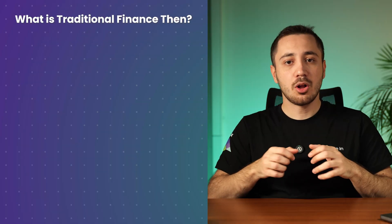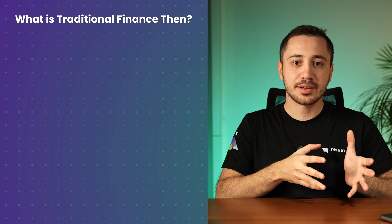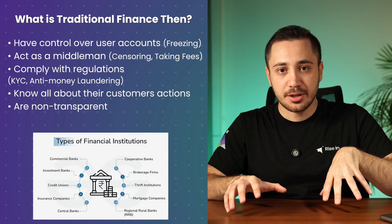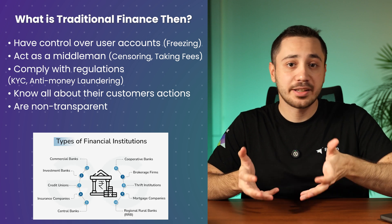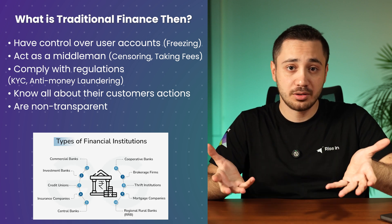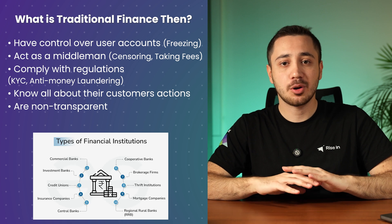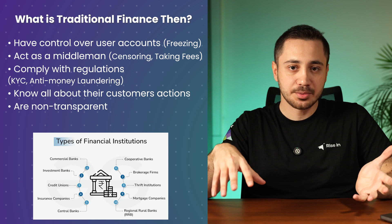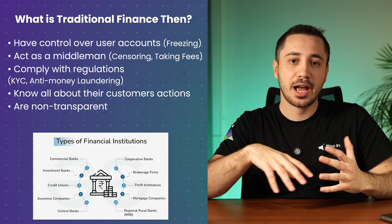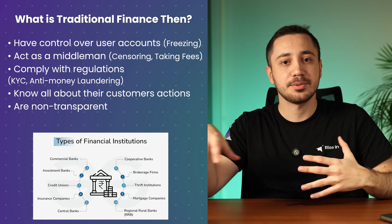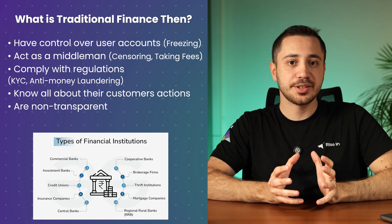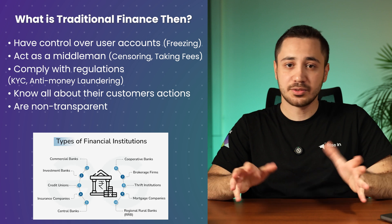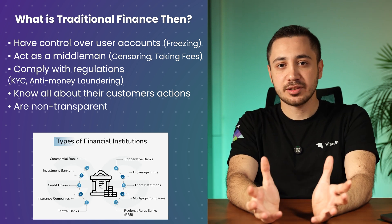These institutions include all kinds of private and central banks and others like mortgage companies. And these entities can literally control user accounts — like freezing accounts or rejecting actions. It's like full control. Since they are the service providers they also have full control over the transactions. They can censor them or take any kind of fee they want to, because in the end you have no other option but to accept or try your chance with another institution. Another issue is since they own the data, they know all about you and all your actions and transactions. On top of that, they are not transparent in the process.